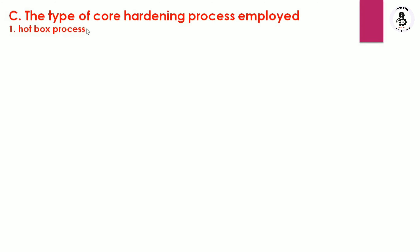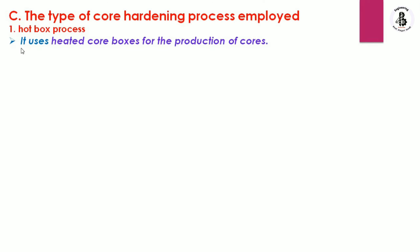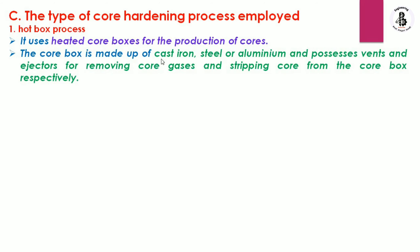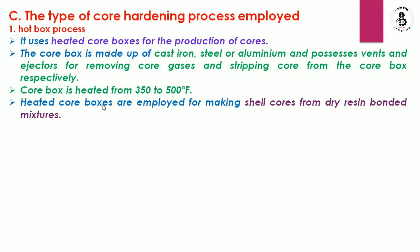The third category is the types of core hardening process employed. The first is the hot box process, which uses heated core boxes for the production of cores. The core box is made of cast iron, steel, or aluminum and has vents and ejectors for removing core gases and stripping cores from the core box. The core box is heated from 350 to 500 degrees Fahrenheit. Heated core boxes are used for making shell cores from dry resin bonded mixtures.